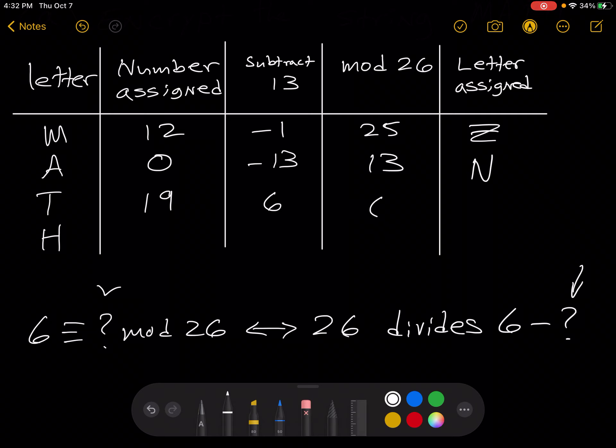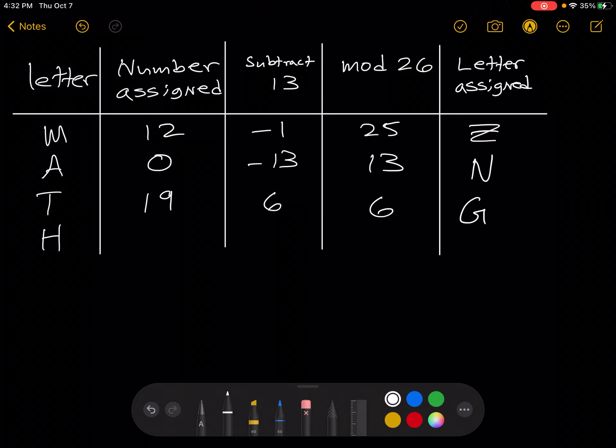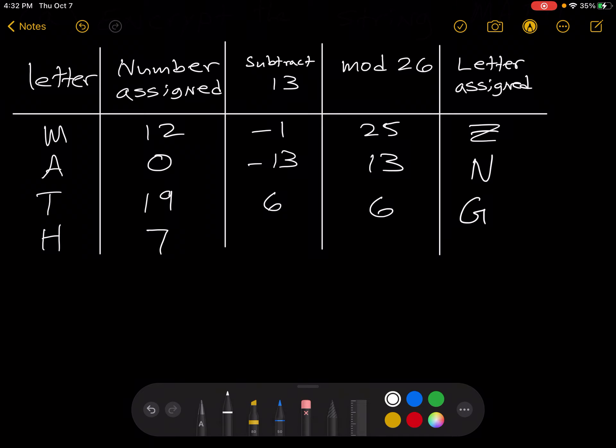So here we have 6. And 6 in the table is assigned to the letter G. Lastly, working with the letter H. We see that H is assigned to the number 7. 7 minus 13 is negative 6.